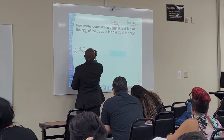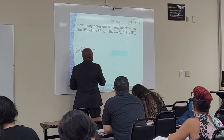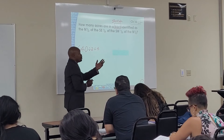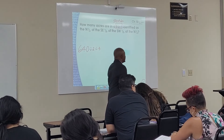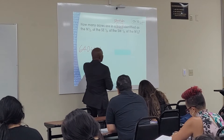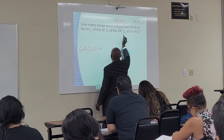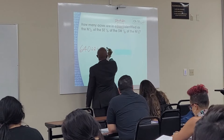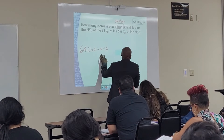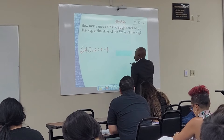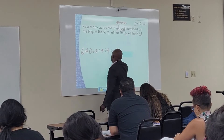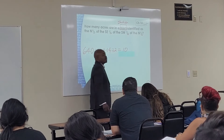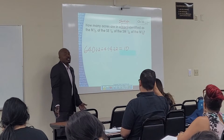320 divided by 4 equals 80. 80 divided by 4 equals 20. Now, 20 divided by 2 equals 10. The answer is 10. Very easy.